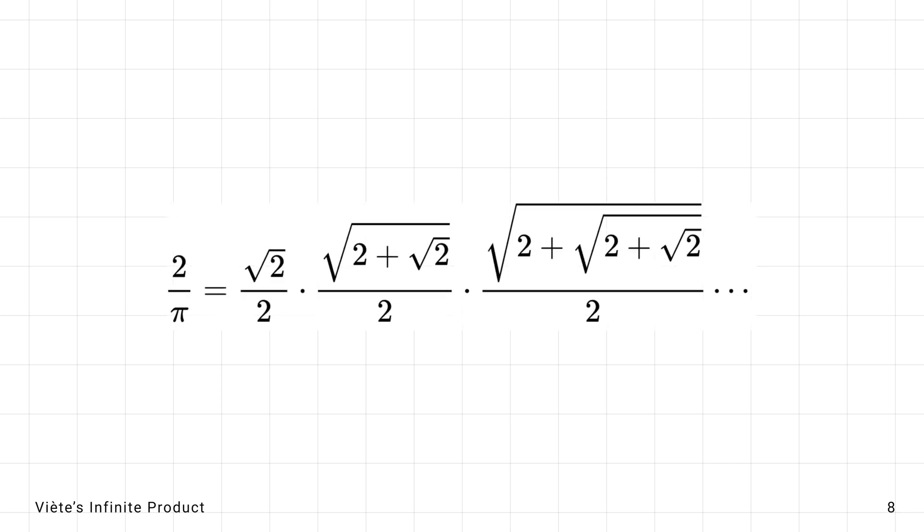This formula expressed pi as an infinite product of nested square roots. This elegant representation was one of the earliest examples of using infinite products in mathematics.